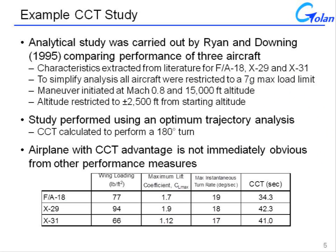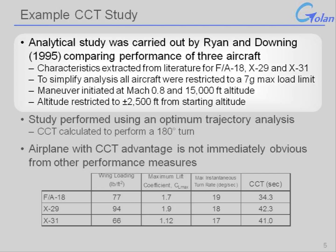To gain a sense of what combat cycle time or a similar metric might bring to the table, we can look at an example from a study published in 1995 that compared the performance of the F-18, the X-29, and the X-31 based upon open literature data. In this instance, they simplified the analysis so that each aircraft was restricted to a 7G max load limit, leveling the playing field. Each aircraft began a turning maneuver at Mach 0.8 at 15,000-foot altitude, with altitude restricted to within plus or minus 2,500 feet from the starting altitude.